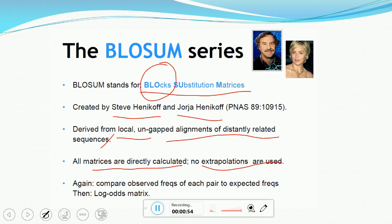All matrices are directly calculated and no extrapolation is used, unlike in the PAM matrices where the extrapolation method was used. We have to compare observed frequencies of each amino acid pair to expected frequencies, then the log values will be created to generate a log matrix. This matrix is known as BLOSUM matrices.